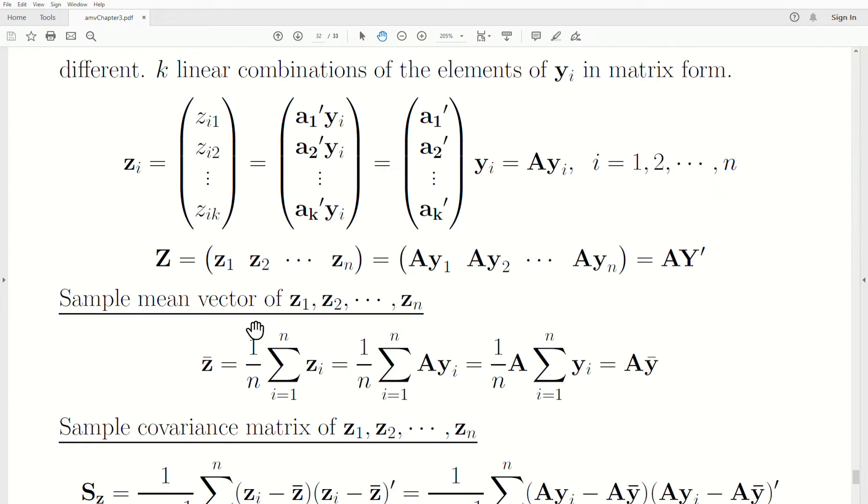So now the sample mean vector would be just the mean z bar. It's the mean vector, which is really the sum divided by n. You can put in Ay, factor out an A, and then the sum of the yi's divided by n is y bar.